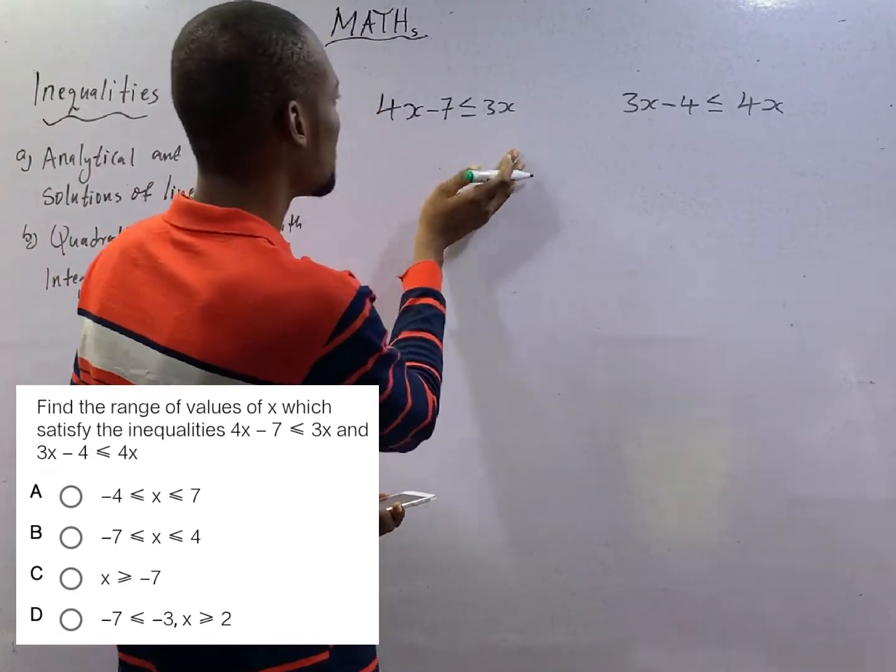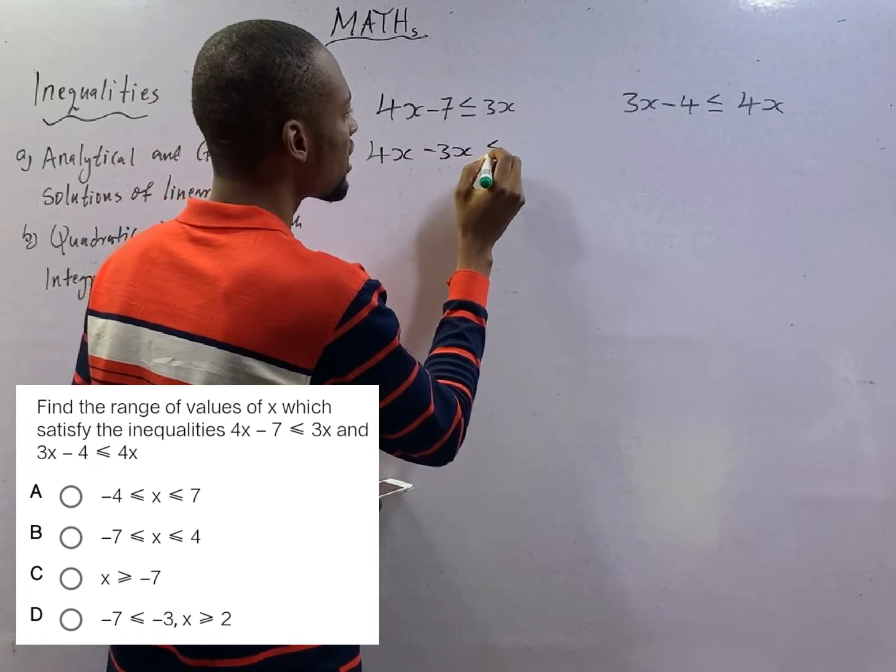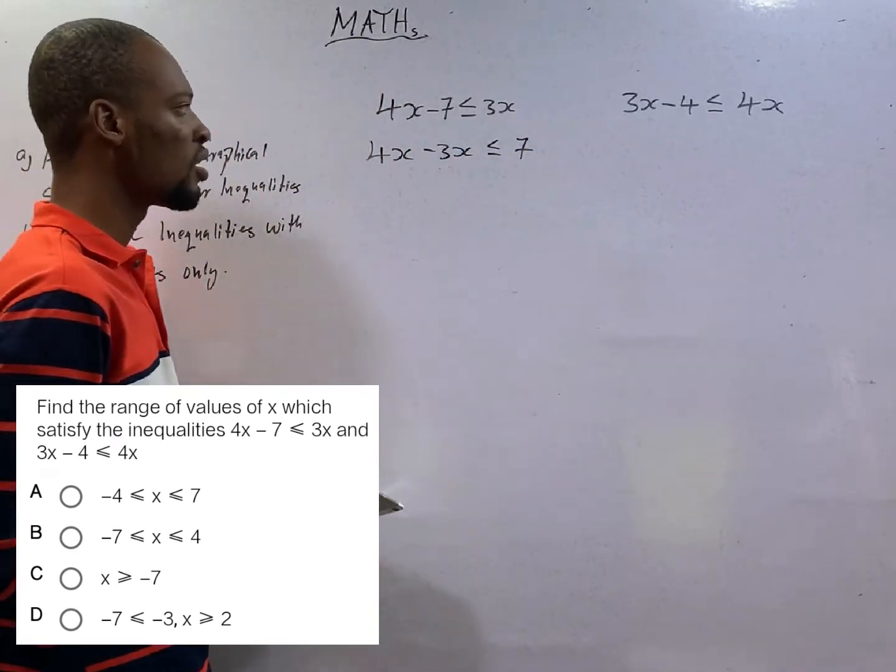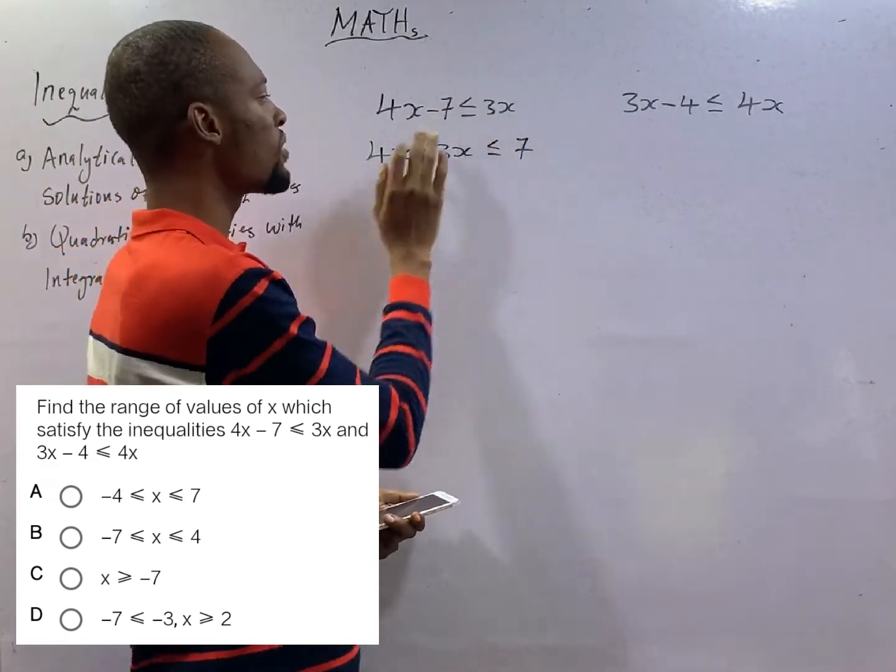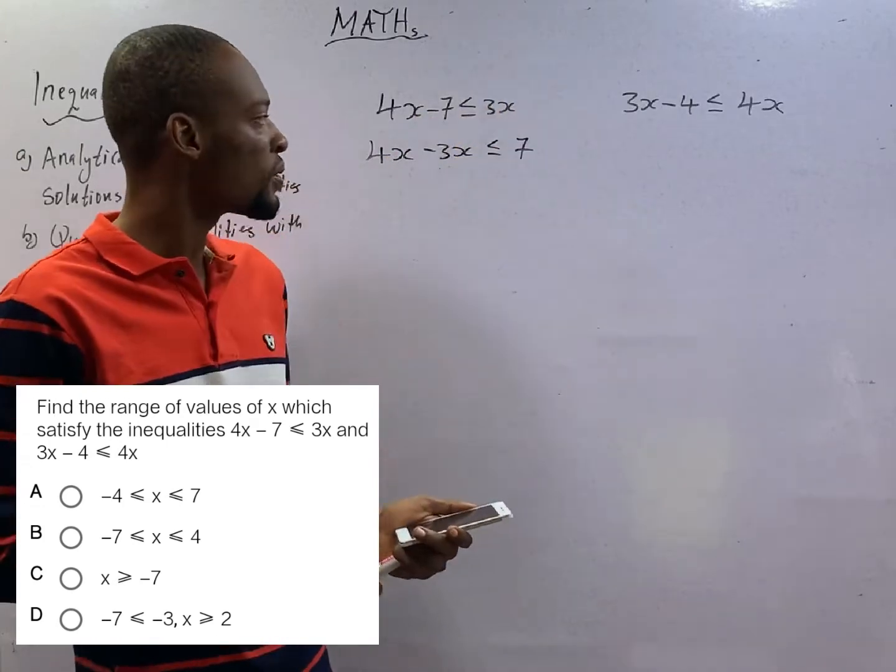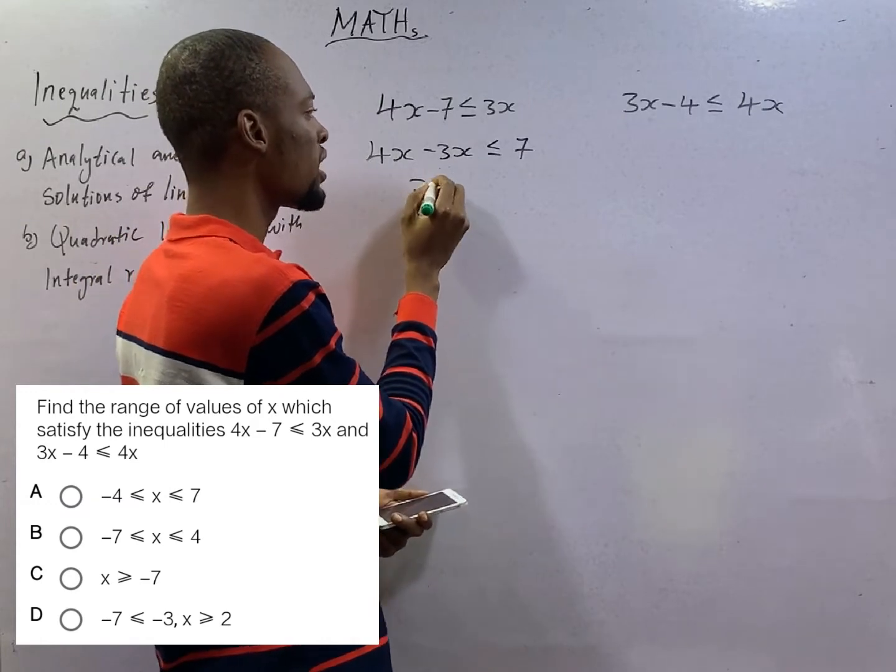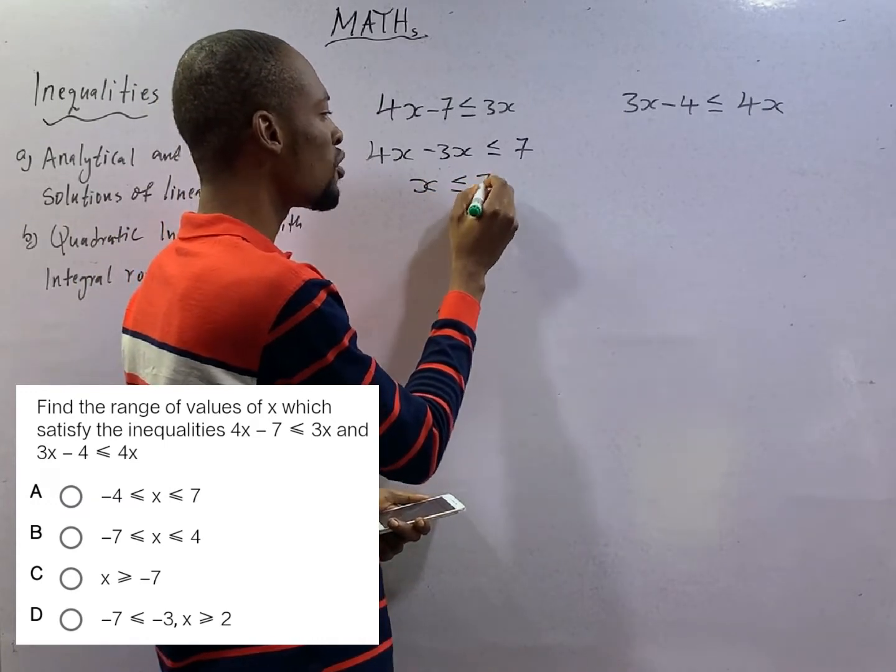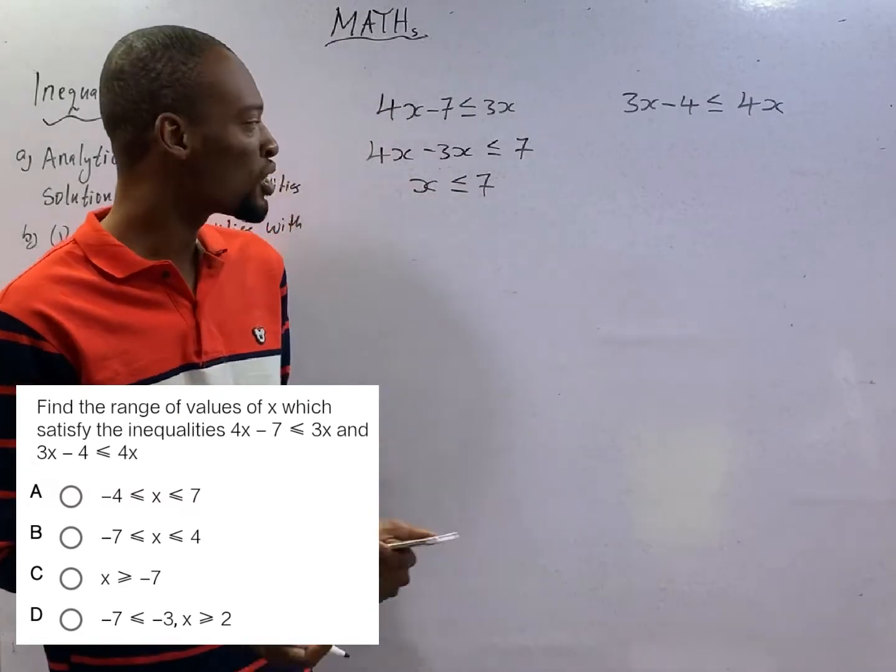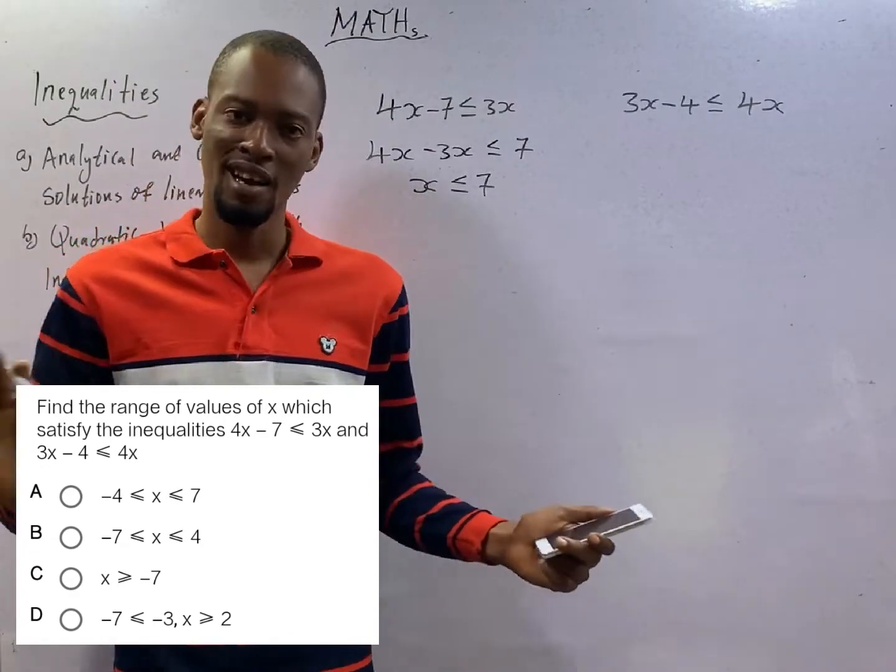From here, obviously 4x minus 3x is less than or equal to 7. This time around, what did we do? Collecting like terms. 3 comes here to become -3, -7 goes there to become +7. 4x minus 3x, that is simply 1x. So 1x is less than or equal to 7. This time around, we are not dividing both sides or multiplying both sides by a negative number, so we retain our symbol.